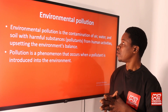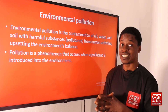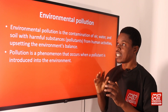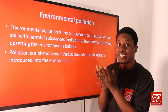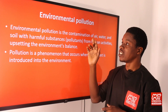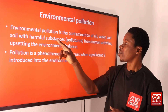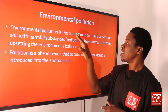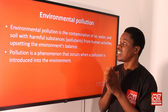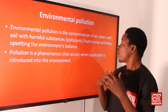Environmental pollution is the contamination of air, water, and soil with harmful substances — referred to as pollutants — from human activities, upsetting the environment's balance. This is an all-encompassing definition. If you are asked to define air pollution specifically, you would say air pollution is the contamination of air with harmful substances from human activities. So environmental pollution covers contamination of air, water, and soil with harmful substances from human activities.